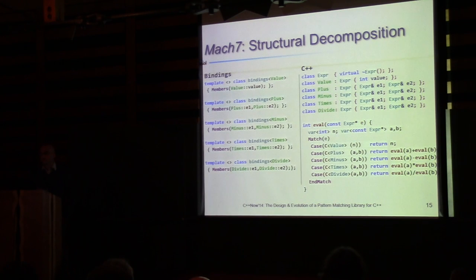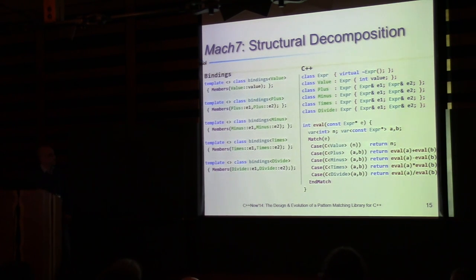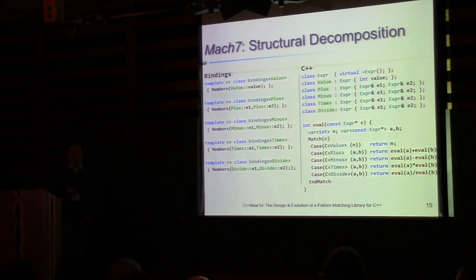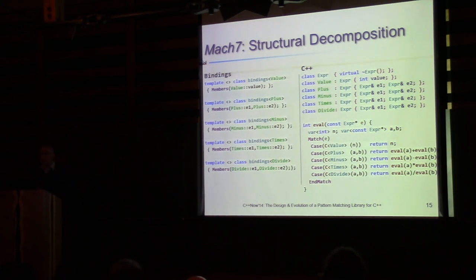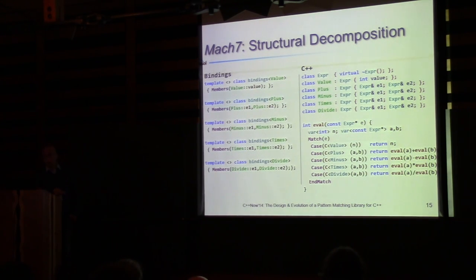On the question of private members: you still get encapsulation. If from outside you don't have access to members, you will have to change the class. But if a data member is private yet you have a getter for it, you just put the name of the getter in the bindings and it will work.